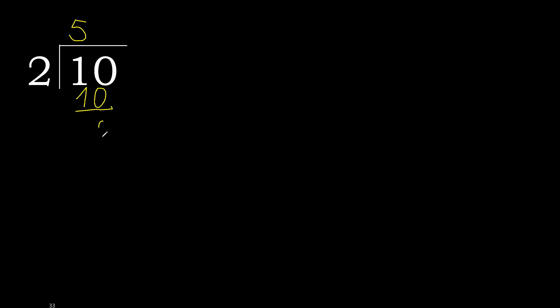10 minus 10 is 0. That is not a number, therefore finish it. 10 divided by 2 is 5.